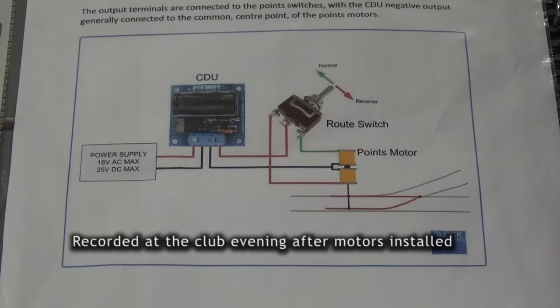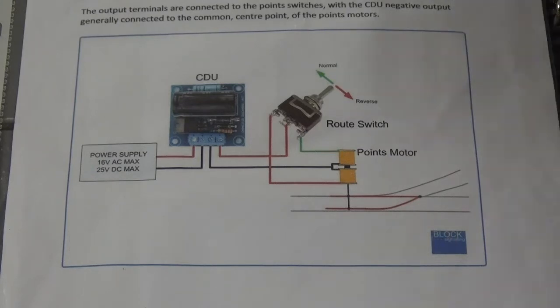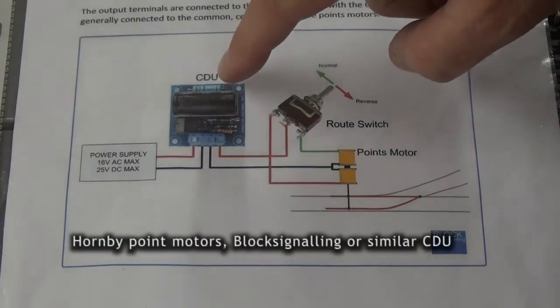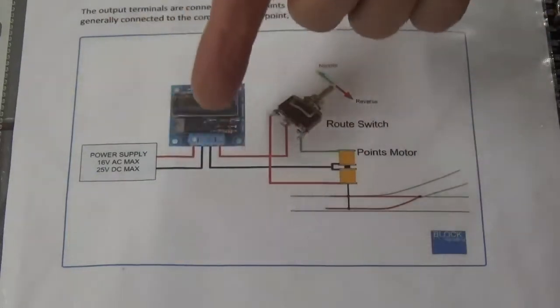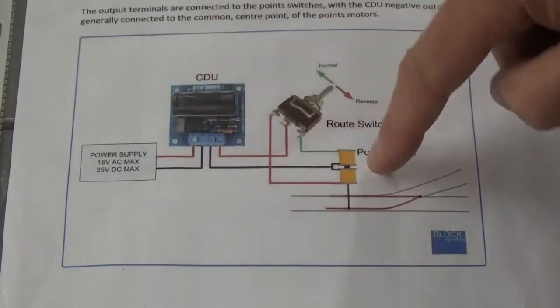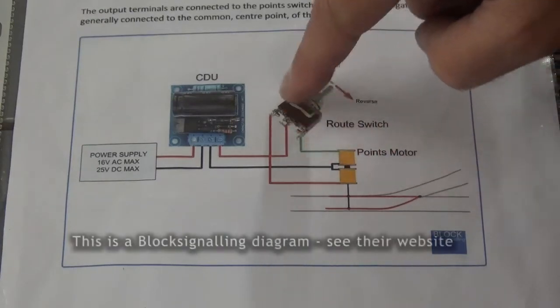For the past couple of weeks we've been installing point motors. These are Hornby point motors with a capacitor discharge unit, a CDU, to give them an extra kick. This is the point motor represented here and a three-way switch.